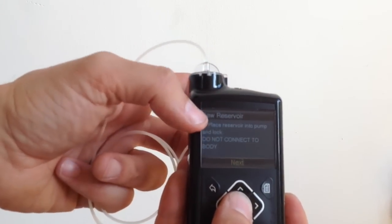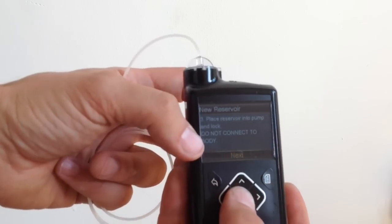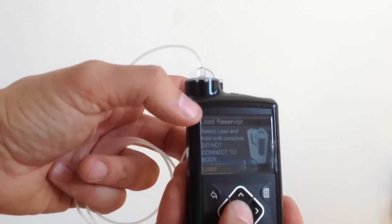And then click. And just round until it stops. So I've gone through this. I've placed the reservoir into the pump and locked it. And then next. And the centre button. And now we're doing the load.